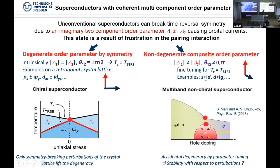The two components in the accidentally degenerate case come from different irreducible representations, so they are not individually expected to have the same condensation energy. This is what we call accidental degeneracy — you need some tuning parameter such as hole doping to achieve degeneracy between the two states. Time reversal symmetry breaking and TC can then coincide. Any modification of the system would be expected to lift this accidental degeneracy. In contrast, if I have symmetry-degenerate order parameters from the same irreducible representation, then a symmetry-conserving perturbation should not break the degeneracy between the x and y components.